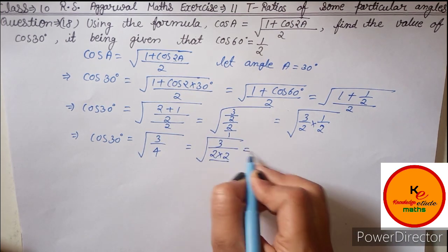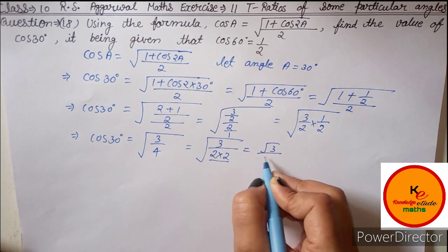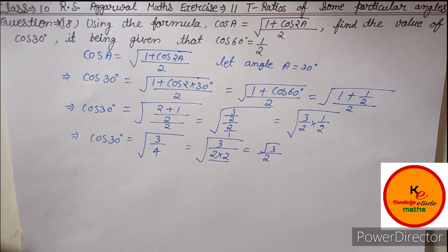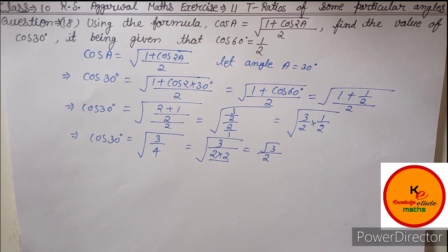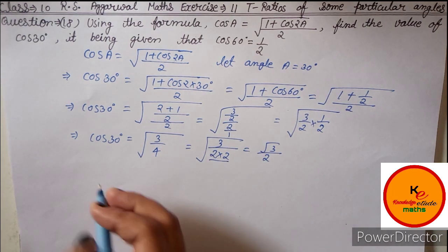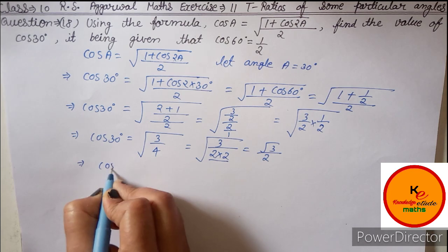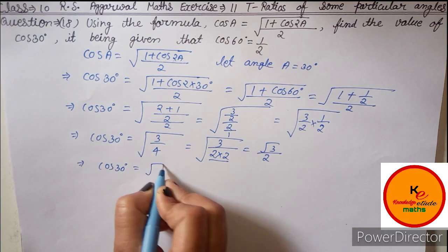Now the square root of 4, you can find it like this: 3 upon 2 into 2. When you take 2 out, under root of 3 will remain and divide by 2. In this way, the value of cos 30 degree you are getting is root 3 by 2.